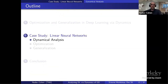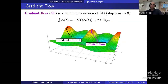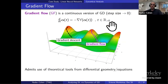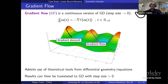We will analyze the dynamics of gradient descent over linear neural networks and use this analysis to draw conclusions on optimization and generalization. A key technical tool is gradient flow — a continuous version of gradient descent, obtained by taking the step size to be infinitesimally small. This is a differential equation: if gradient descent moves in discrete steps, gradient flow traces a continuous curve. It is useful because it allows us to apply tools from differential geometry and differential equations, and results can then be translated back to gradient descent with a positive step size.